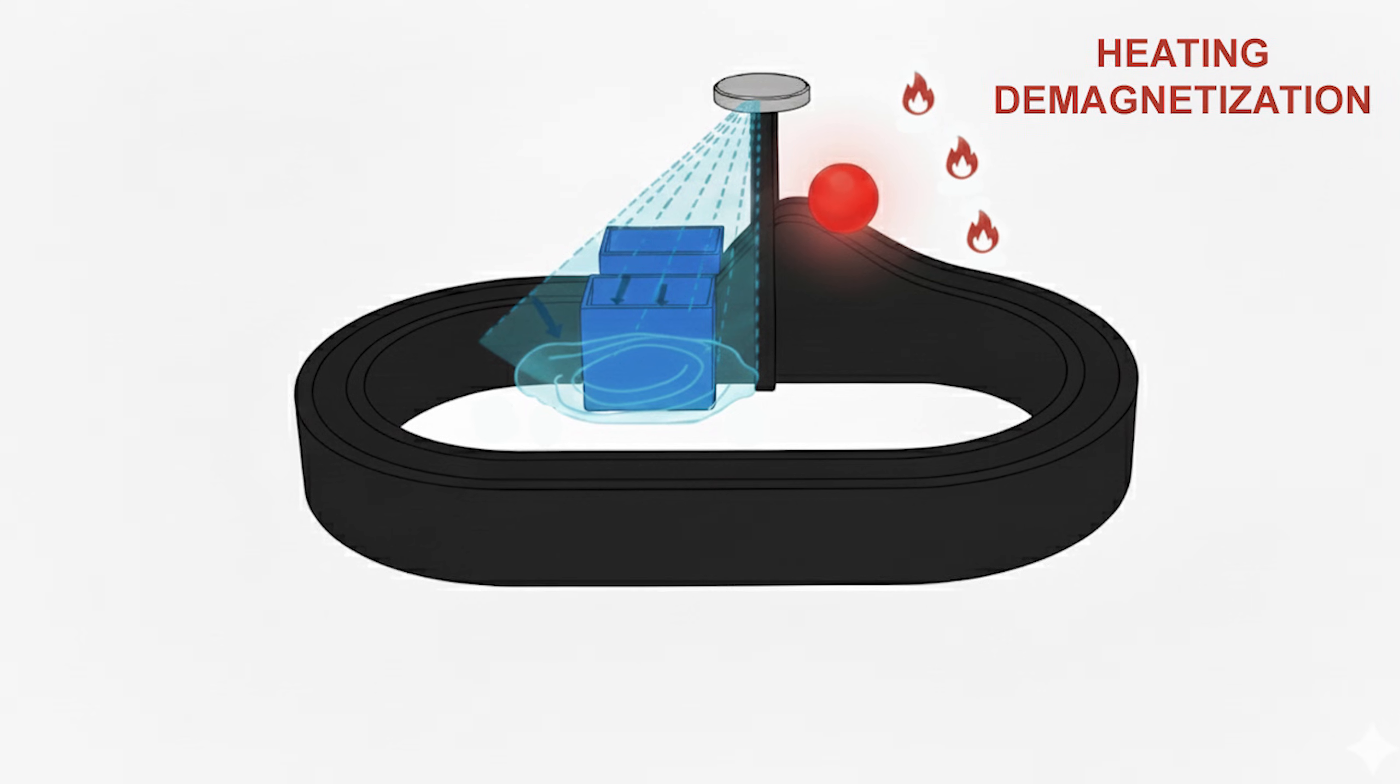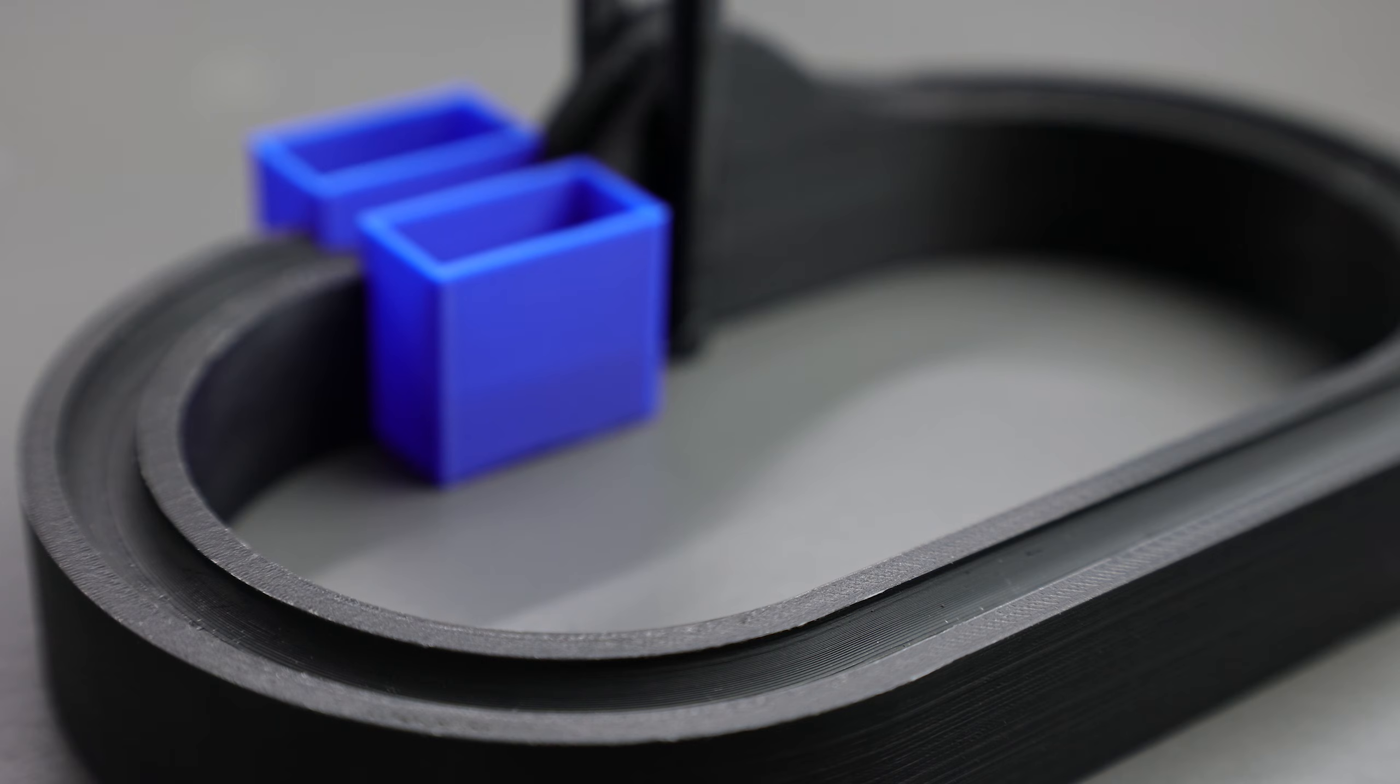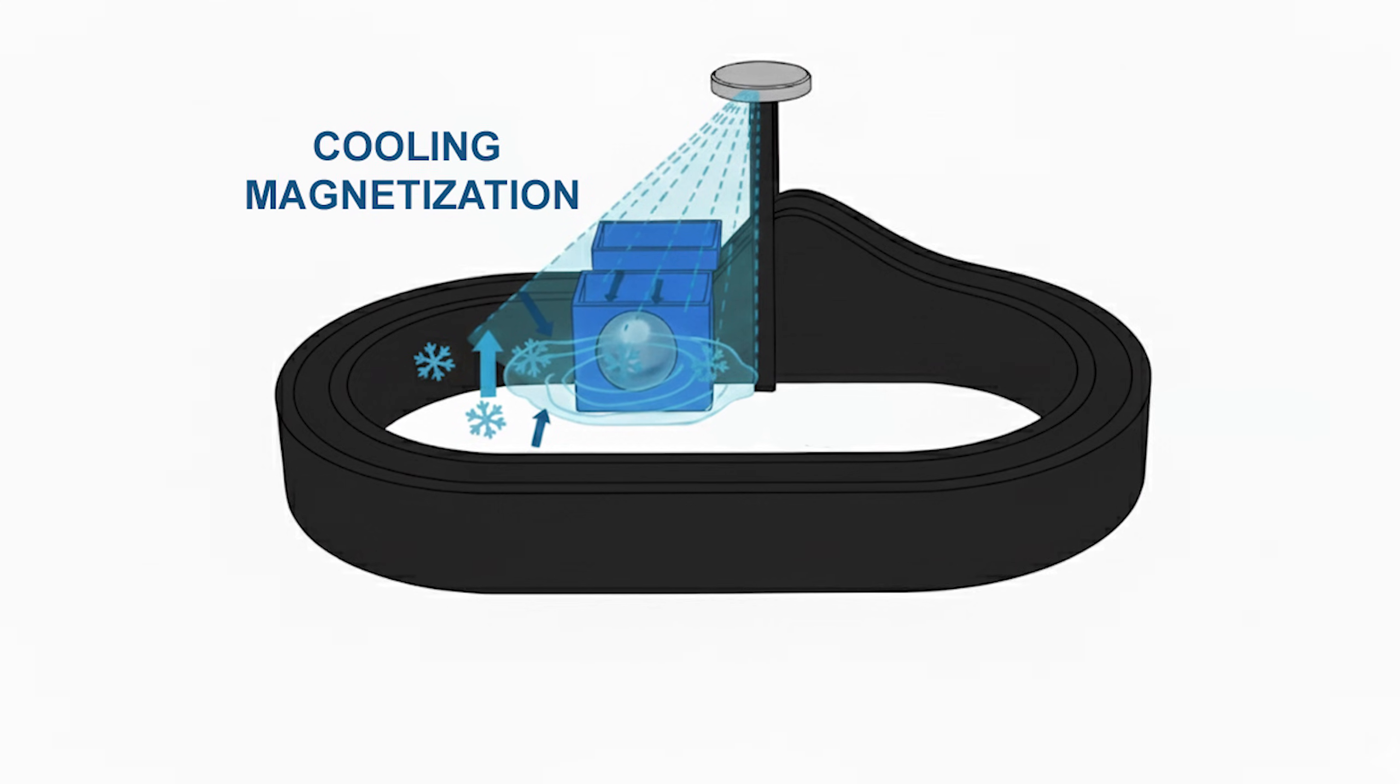The magnetic alignment shatters. The pull of the neodymium magnet vanishes, and gravity takes over. The sphere drops back down the oval track, losing its kinetic energy as it rolls back into the cooling zone to recharge.